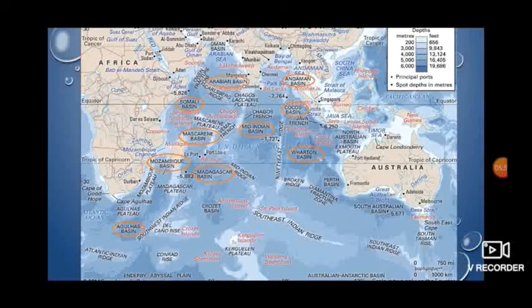The Somali Basin is bordered by the Chagos Ridge in the northwest, the Central Ridge in the east, the Mauritius Ridge in the southwest, and the African coast in the west, with an average depth of approximately 3,600 meters. The Mauritius Basin is located between the southwest of the Indian Ridge and south of the Madagascar Ridge, where the depth varies between 4,000 to 6,000 meters.